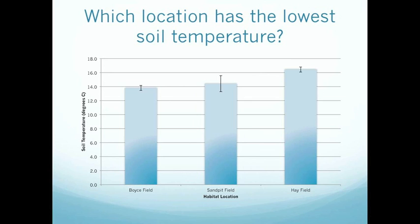Let's reverse the question now. Which location has the lowest soil temperature? In this case, we can see that the average soil temperature for Boyce field is lower than that of Sandpit and Hayfield. However, if we draw a line across from the top of the error bar of Boyce field, we can see that a large portion of data for Sandpit field actually falls below that line. Meaning, there is a significant portion of data from Sandpit field which ends up being lower than, or the same as, the data from Boyce field.